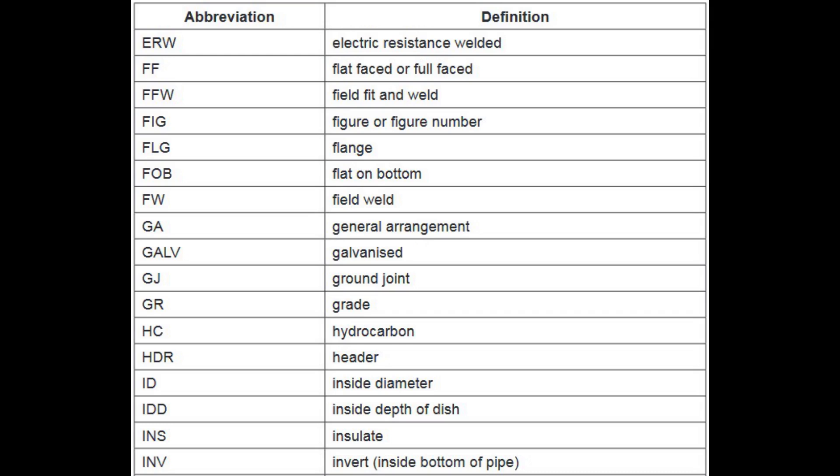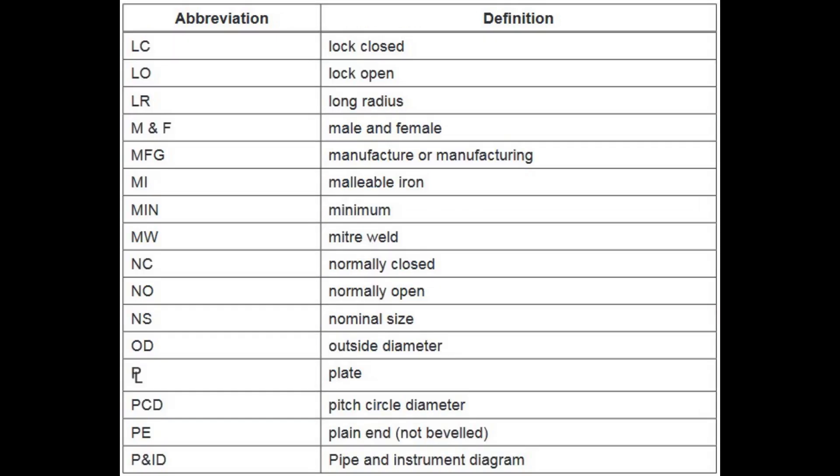ID stands for Inside Diameter. IDD stands for Inside Depth of Dish. INS stands for Insulate. INV stands for Invert, inside Bottom of Pipe. LC stands for Lock Closed. LO stands for Lock Open. LR stands for Long Radius. M&F stands for Male and Female. MFG stands for Manufacture or Manufacturing. MI stands for Malleable Iron. MIN stands for Minimum. MW stands for Miter Weld.